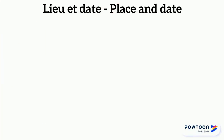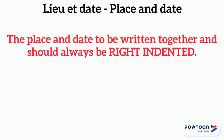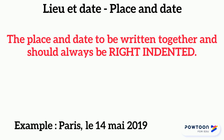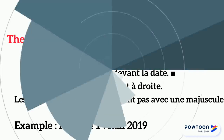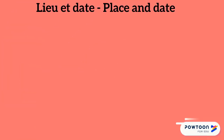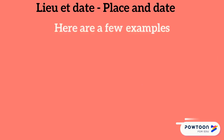Lieu et date. The place and date should always be written together and should be right indented. Remember to add the article LE before the date. The month of the year is never written in capital letters.